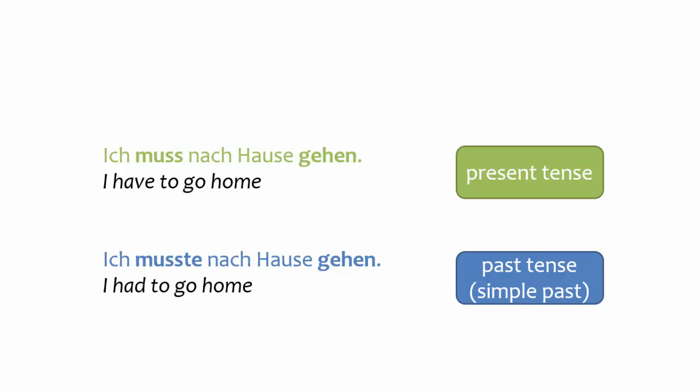Just like sentences with modal verbs in the present tense, sentences with modal verbs in the past tense are formed with a conjugated modal verb plus a dependent infinitive. Compare the sentences on your screen, one of which is in the present tense and the other in the past tense. You can see that the structure of the sentences is exactly the same. The only thing that's different is the form of the modal verb.